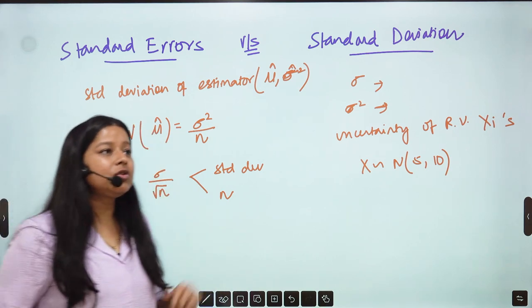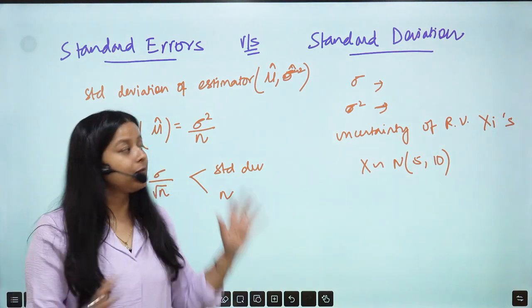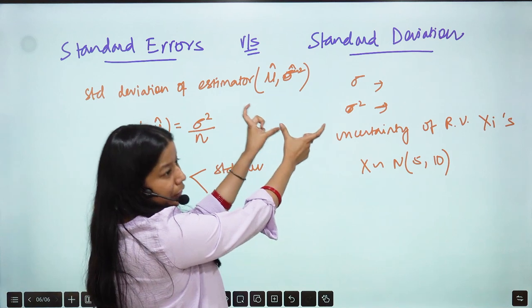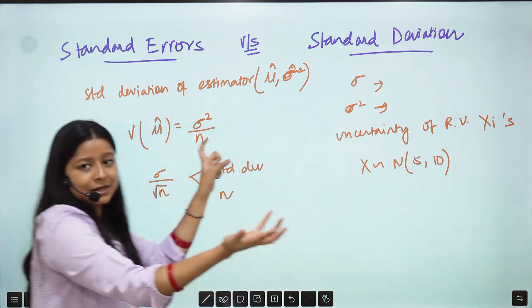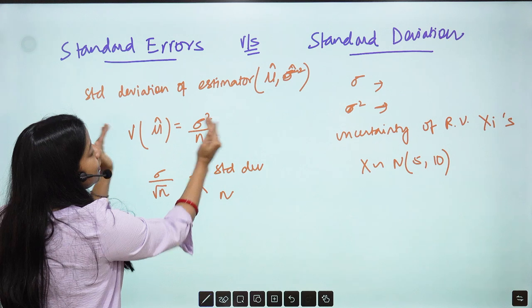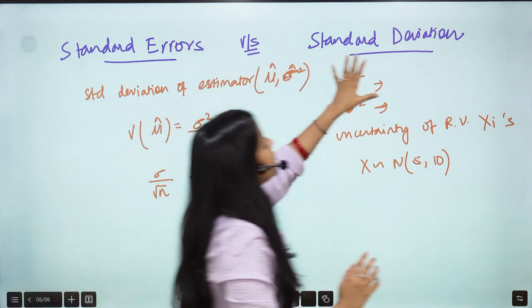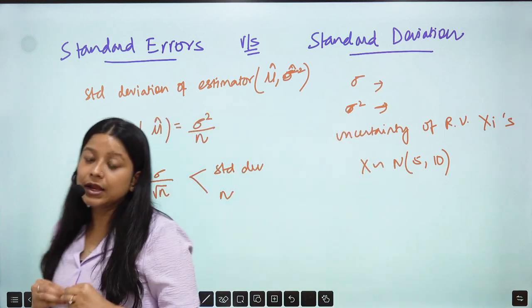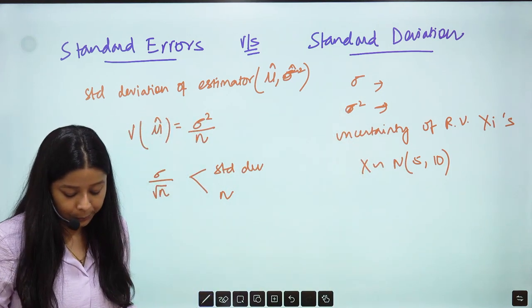Sometimes you see Standard Error and Standard Deviation people use it interchangeably but ideally you should not. Standard Error is Standard Deviation of an estimator, mu hat, sigma hat square, whatever lambda hat, whatever estimator you have. Standard Deviation is when you are finding uncertainty in the data or the random variables which is given to you.